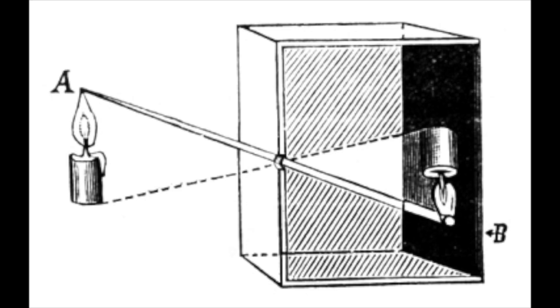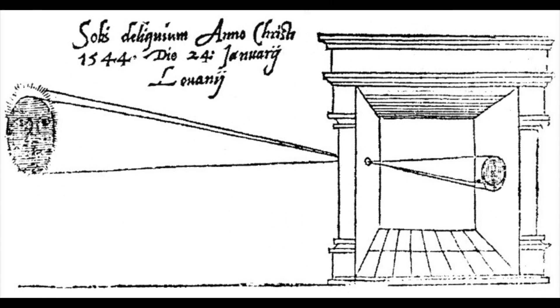The idea first came into concept around 400 BC, when Moti claimed that an image was flipped upside down as the light from one thing travels in straight lines. Aristotle put practical use of Moti's ideas by examining the light that traveled through a small hole in between tree leaves during a solar eclipse.